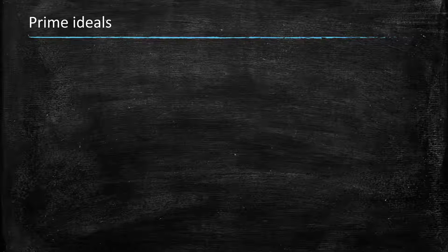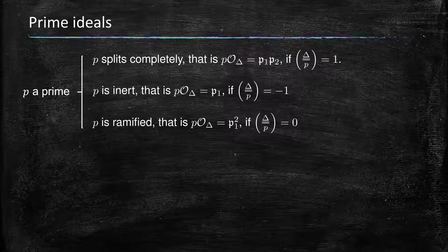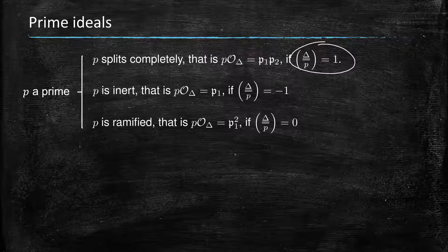Prime ideals are also very convenient to analyze in the quadratic case. Remember we have three different possibilities: p splitting, p being inert, or ramification. For p a prime, p splits if and only if the Kronecker symbol is 1 modulo p — that is, if delta has a square root mod p. The opposite means p is inert, in which case p times the order is a prime ideal. Ramification happens when p divides the discriminant, so only finitely many primes are ramified.